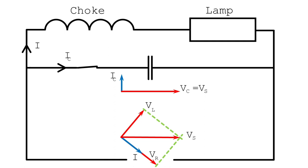So now let's have a think about what our phasor diagram for our capacitor is going to look like. We're going to use the voltage as the reference phasor, and if you remember back to the videos on leading and lagging nature of capacitive and inductive loads, in a capacitive circuit the current leads the voltage. So if we draw the voltage as a horizontal arrow - the same length as the supply voltage because the capacitor is in parallel - then the current will point directly upward at 90 degrees to our voltage arrow, showing that the current is leading the voltage.